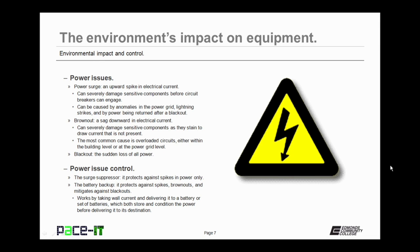Then there's the brownout. This is a sag downward in electrical current. These can also severely damage sensitive components as the components strain to draw current that is not present for them to draw on. The most common cause is overloaded circuits, either within the building or at the power grid level. Then there are blackouts, the sudden complete loss of all power.